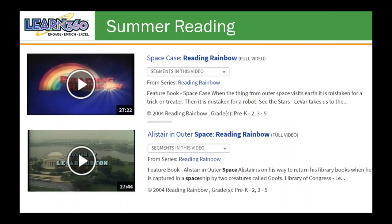We also have Reading Rainbow — something you wouldn't want to forget. There are some excellent books that LeVar Burton reads that will be good for story times, possibly just to mix things up. The second one, Alistair in Outer Space, is about a boy on his way to return his library books who gets captured by a spaceship — a fun read that would be appropriate to incorporate into your summer reading program.